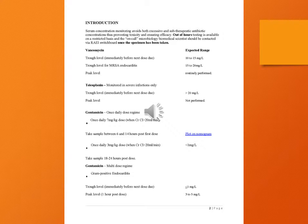Gentamicin once-daily dose regime: once daily 7 milligrams per kilogram dose when CrCl is more than 20 ml per minute — take sample between 6 and 14 hours post first dose. Once daily 3 milligrams per kilogram dose when CrCl is less than 20 millilitres per minute.